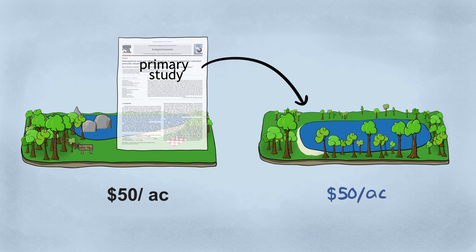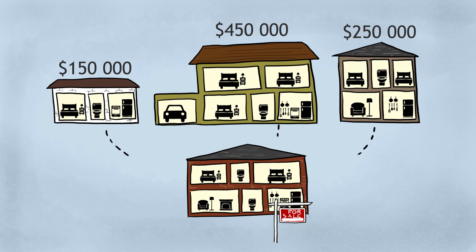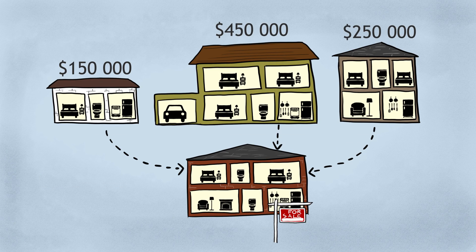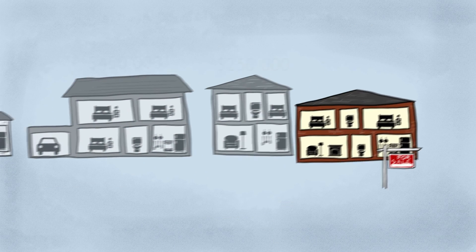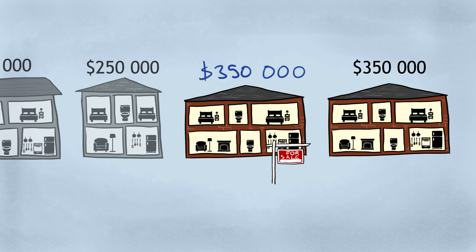It's a lot like house appraisal. There are different methods of house appraisal, but one way is you look at how much houses are selling for, look at the properties of the houses, the properties of the market, and make an estimate for how much this house with these properties would sell for. If the house is basically identical to the house next door that just sold, you can probably assume it's going to sell for pretty much the same amount.